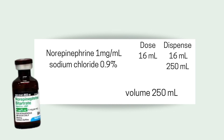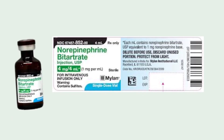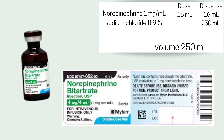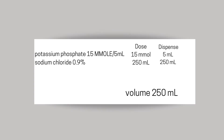Our next medication is norepinephrine, 1 milligram per ml. The dose is 16 ml, dispense 16 ml, in a sodium chloride 250 ml bag, total volume 250. This one is really easy to calculate because it's a 1 milligram per ml vial, so I'm going to need four vials — four times four gives me 16 mls. I'll take 16 mls out of the 250 ml bag and put 16 mls of medication in.